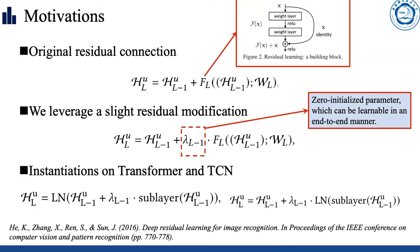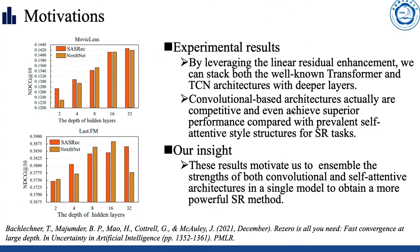One question naturally arises: can the depth of sequential networks really not be stacked with very deep layers? Motivated by this, we attempt to introduce a simple guided modification on the standard residual connection, where the weight can be learned and initialized with zero. Our empirical studies observe that sequential recommendation models can actually be stacked with very deep layers — even up to 32 building blocks on million-scale datasets and up to 100 layers as a temporal convolutional network. These findings greatly differ from previous insights in the recommendation community, where most prior work holds that only several repeated blocks are sufficient.